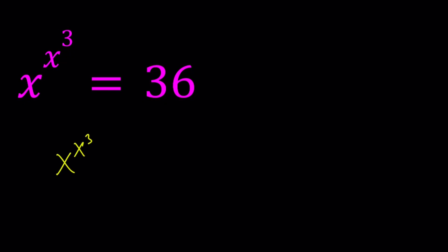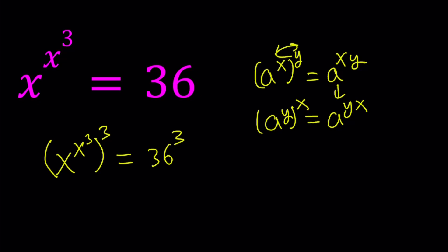But to do that, this is what we need to do. We're going to raise both sides to the third power. And this is going to give us what we need using some of the properties of exponents. If you have something like a to the power x to the power y, then it's equivalent to a to the power xy. But notice that a to the power xy can also be written as a to the power yx, which means it can also be written as a to the power y to the power x. In other words, these exponents can also interchange.